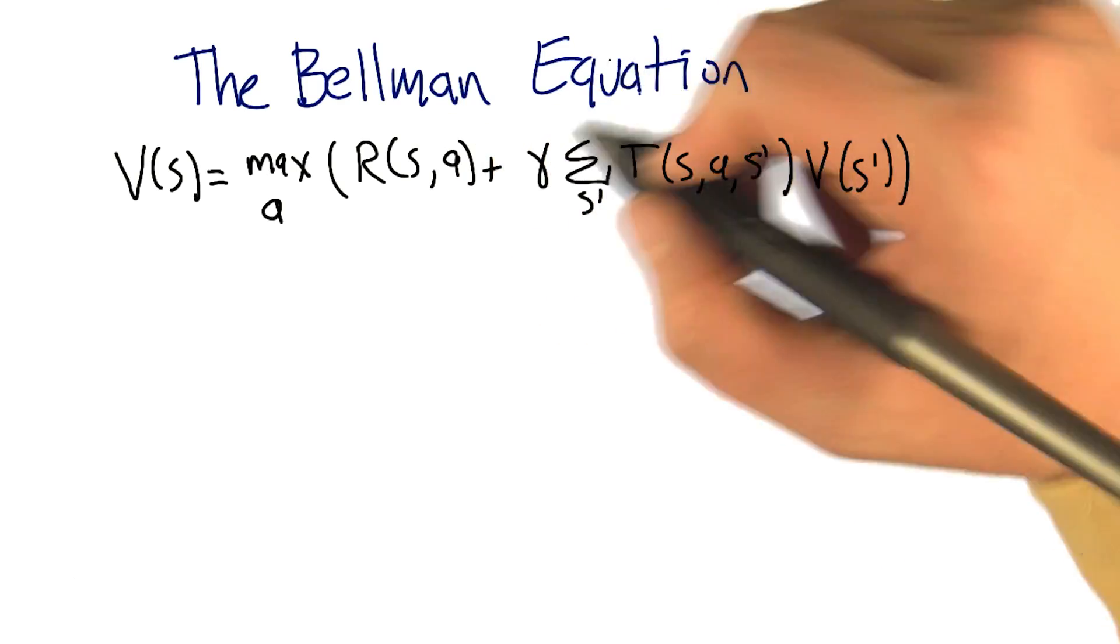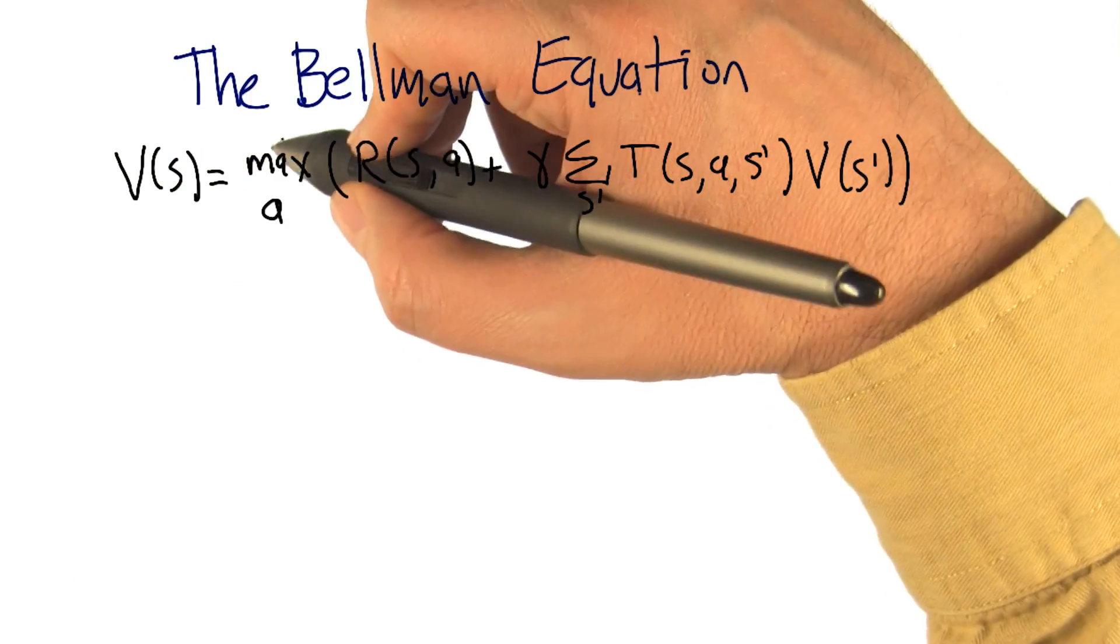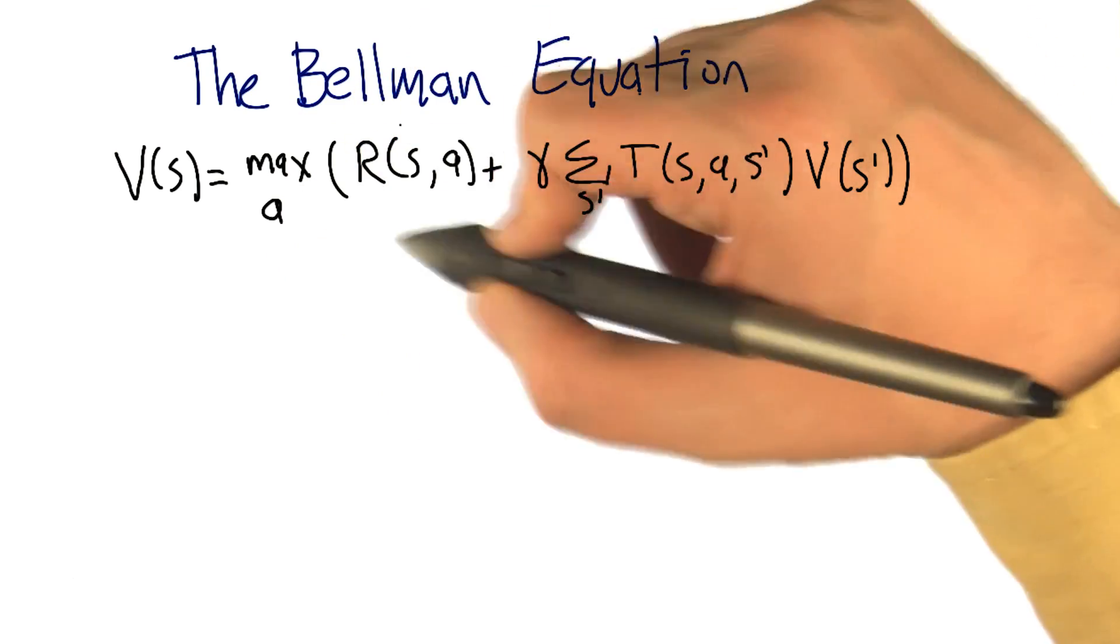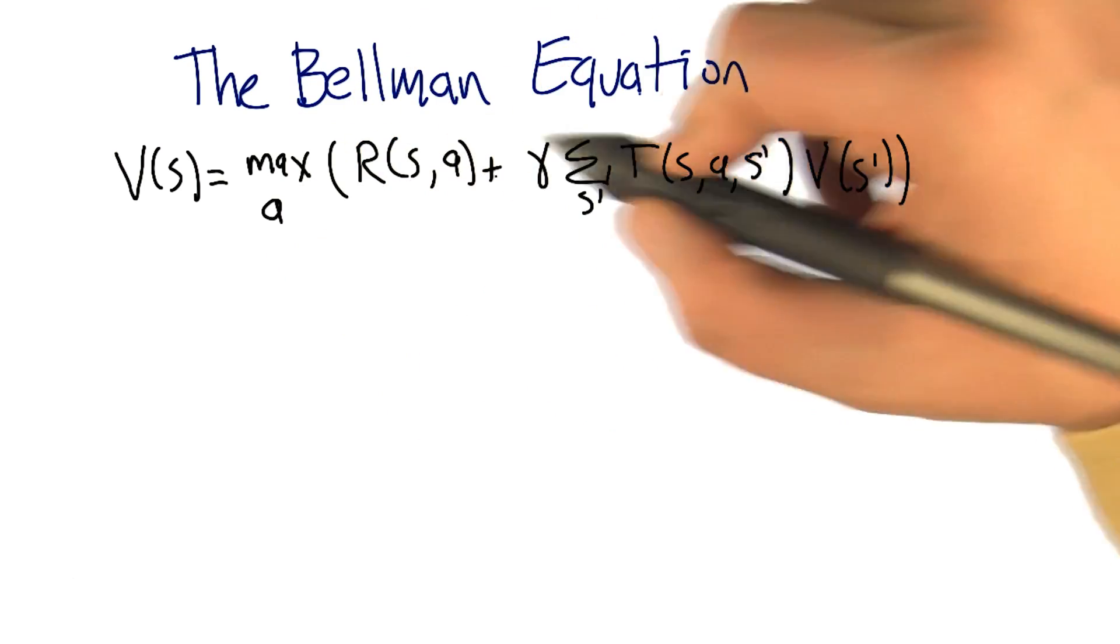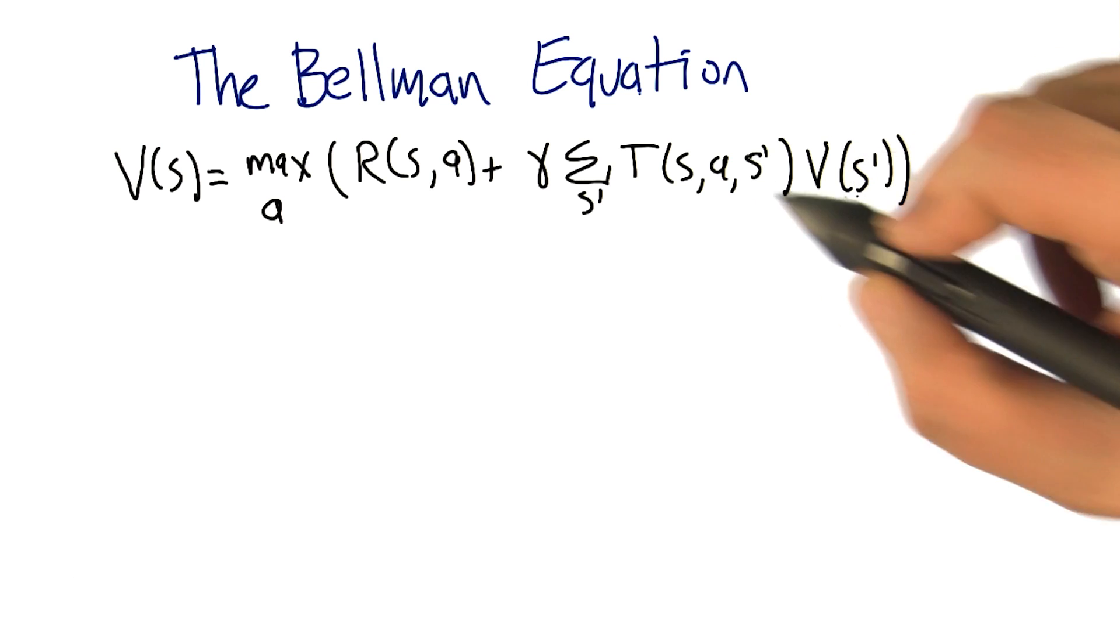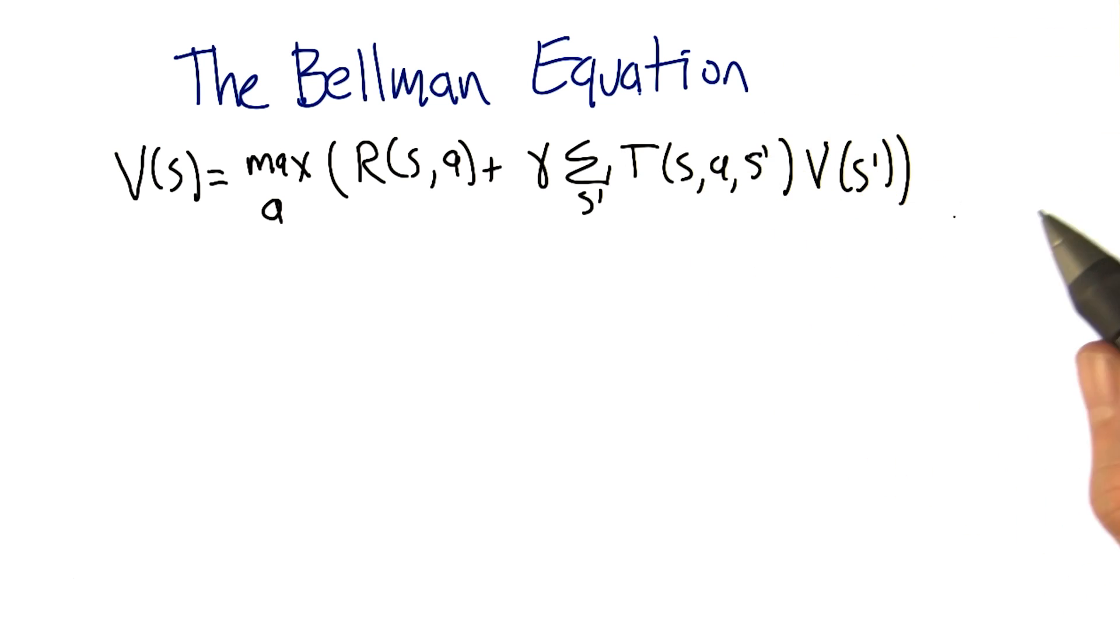So this is the Bellman equation that we were just talking about. The value of a state is the max over all the actions, the reward that you get for taking that action from the state, plus the discounted value of the state you end up in, weighted by the probability that you end up there.